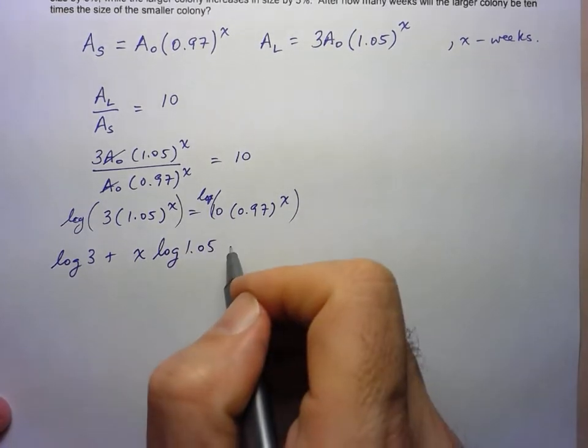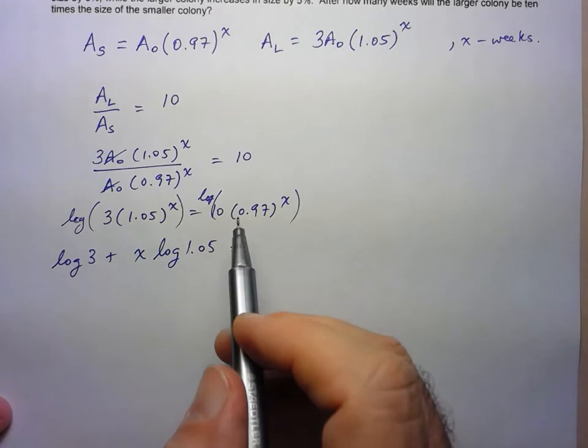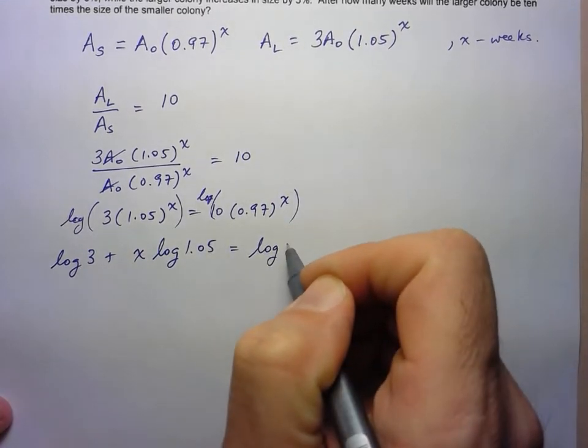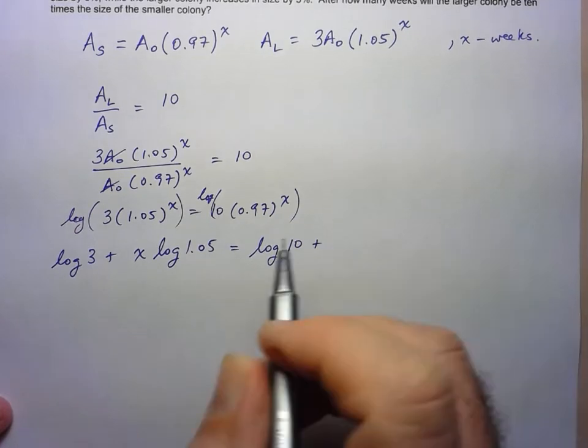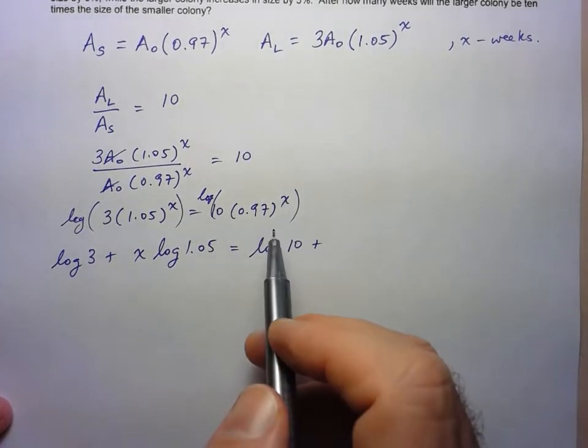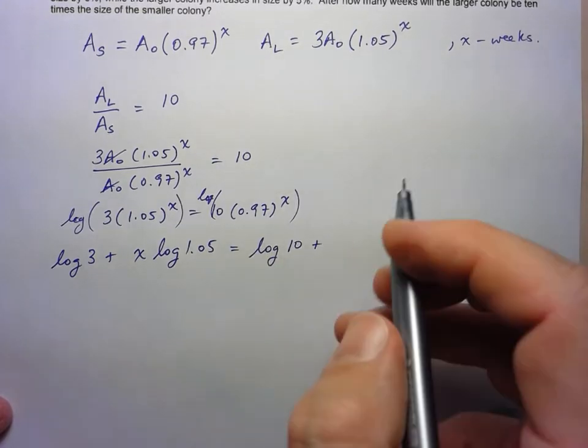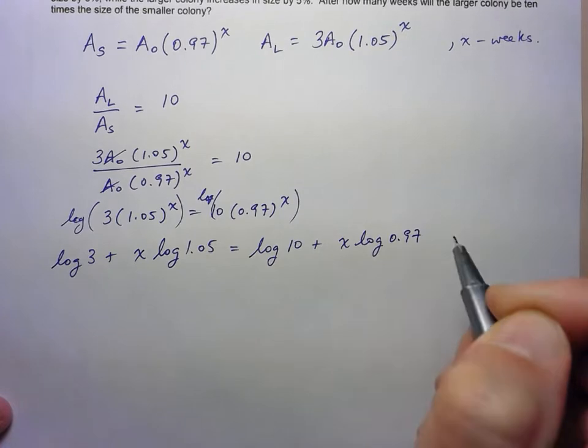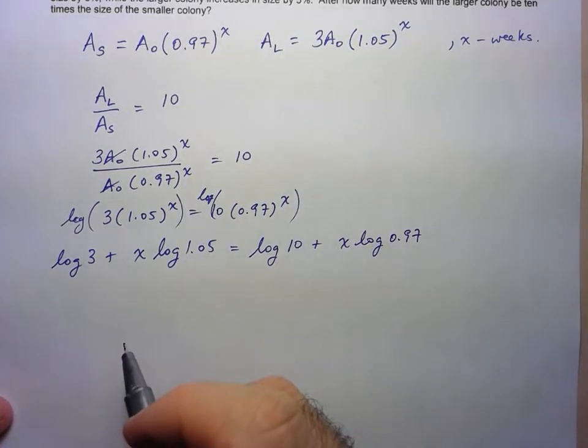And very similarly, on the other side, I'm going to first use the first law of logarithms to split this up into log of 10 plus log of 0.97 to the X. But now I'm going to use the ski slope rule since I've got a single power. So X log 0.97. And now I just have a linear equation, which I can solve.